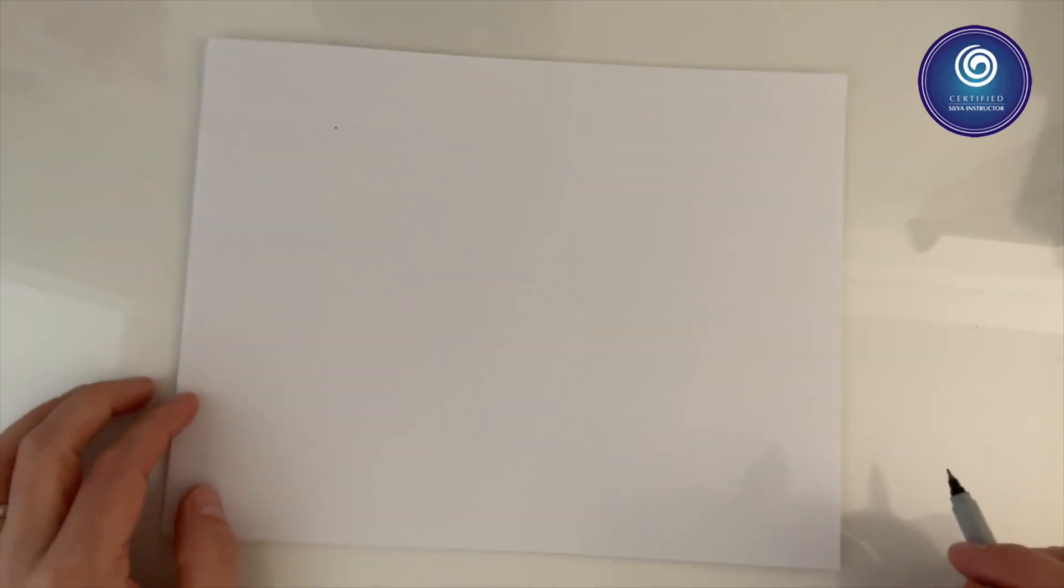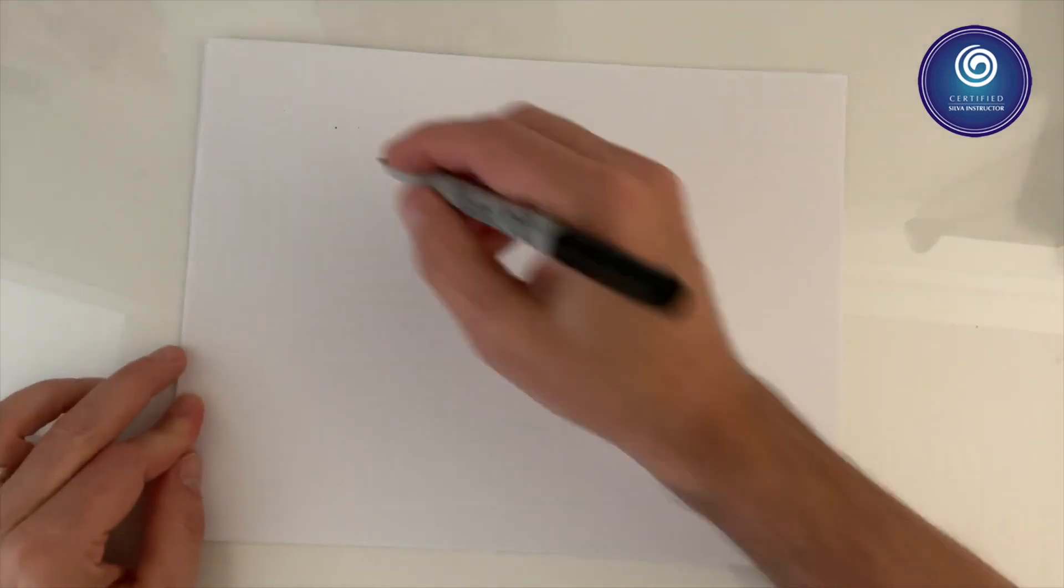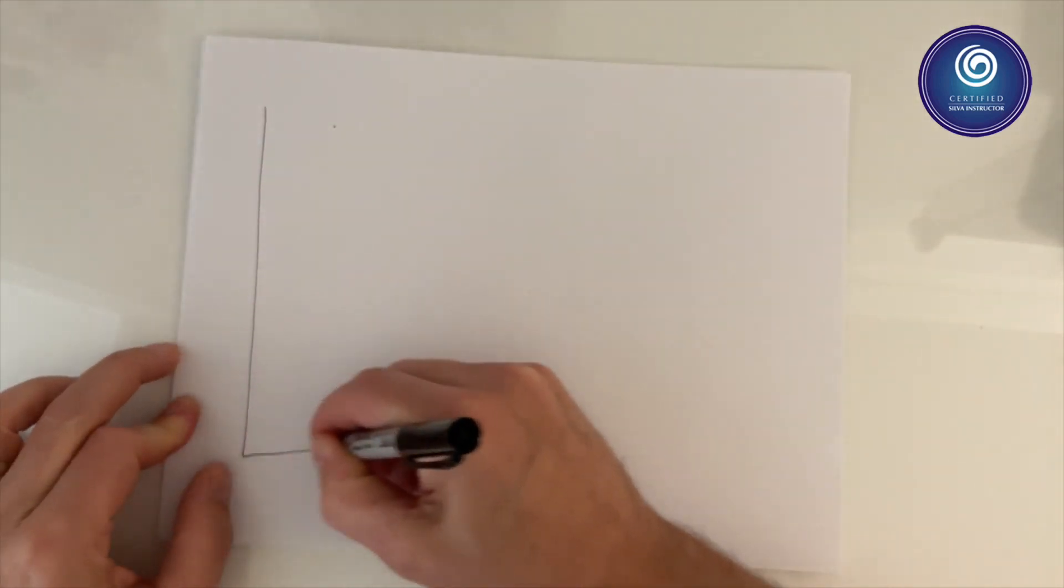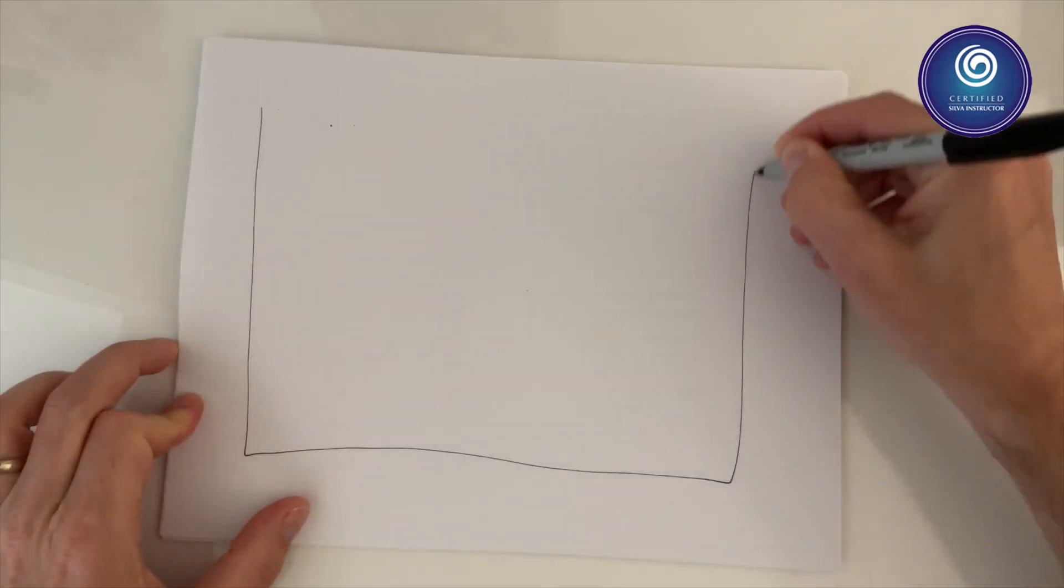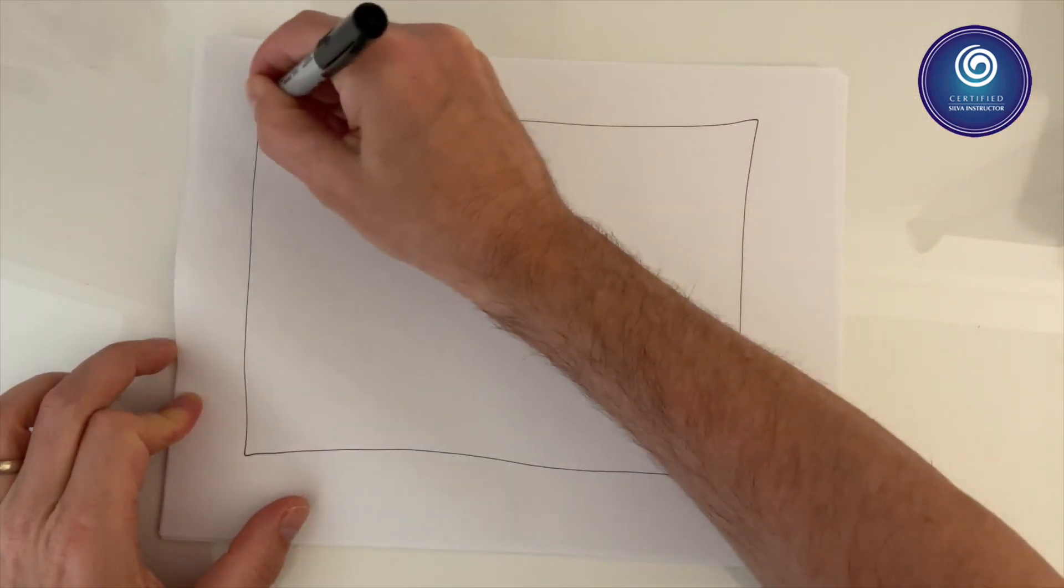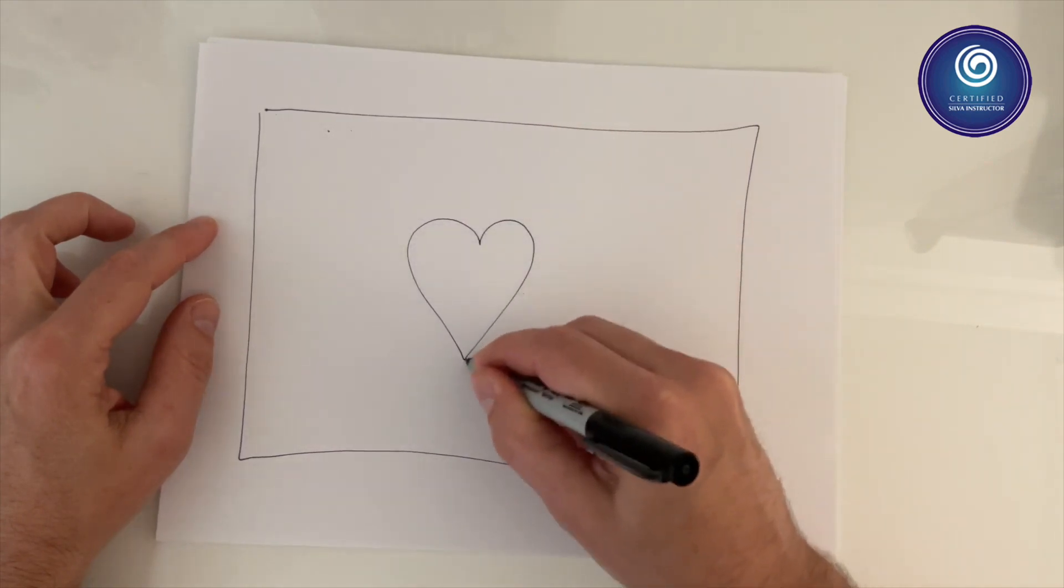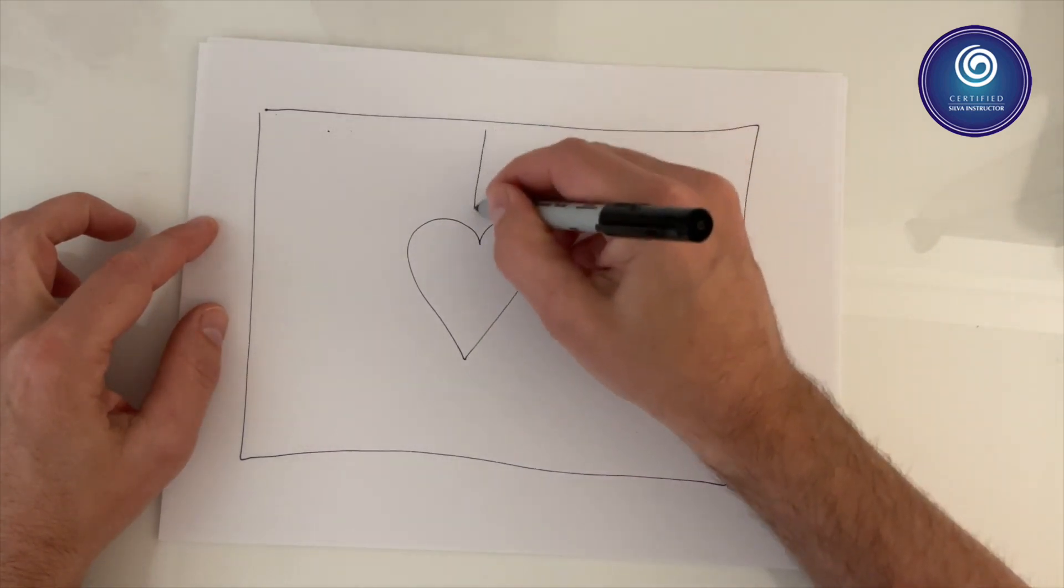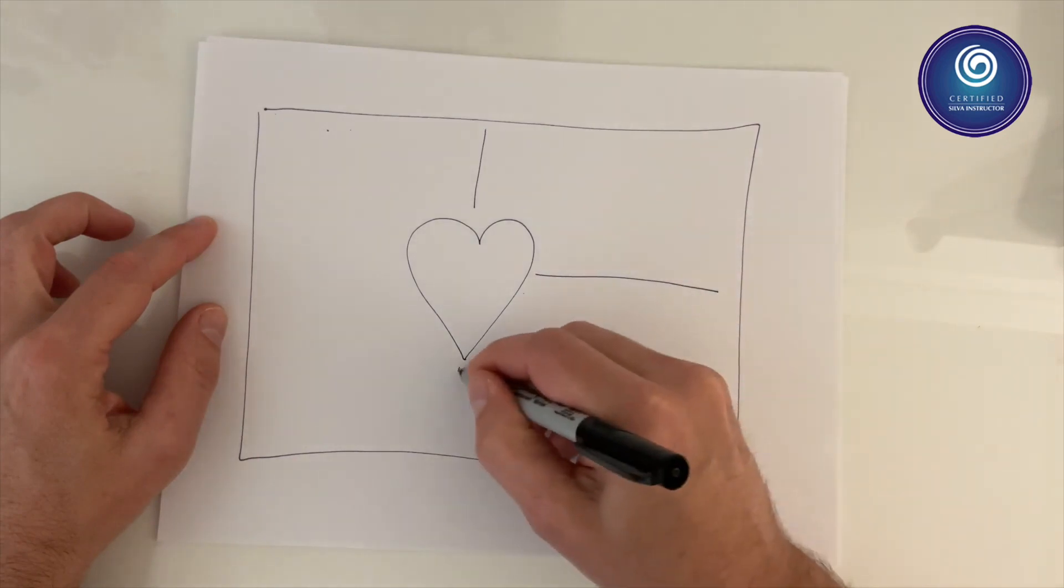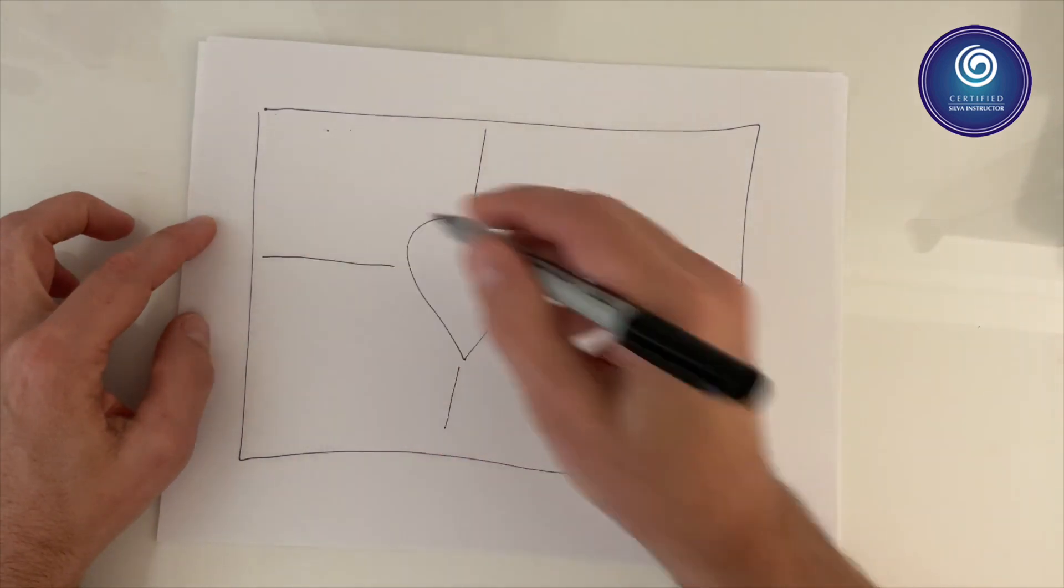If you want to accomplish your goals quickly, do this: take a piece of paper, draw a rectangle. In the middle of the rectangle draw a heart and four lines, just break up the rectangle into four separate parts.